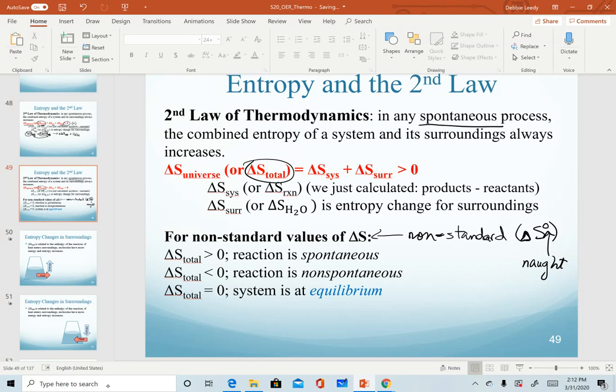And so again, if we determine that the total entropy for a system is greater than zero, or a positive value, that tells us the reaction is spontaneous. If we calculate a negative value less than zero, that tells us it's non-spontaneous. In other words, under those conditions, the reaction won't happen. And then a key thing that again we'll come back to is recognizing that when our total entropy equals zero, that determines when our system reaches equilibrium.